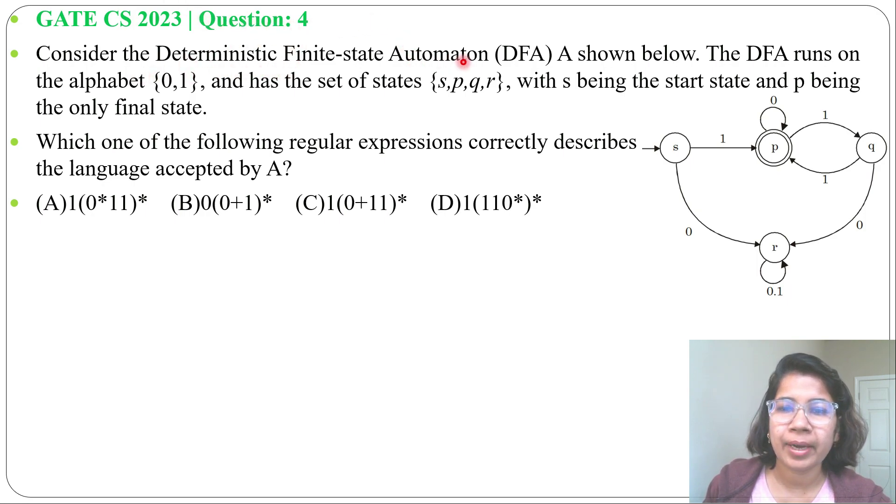Consider the deterministic finite-state automaton DFA shown below. This is the DFA. The DFA runs on the alphabet {0,1} and has the set of states {S,P,Q,R} with S being the start state and P being the only final state. So S is the start state and P is the final state.